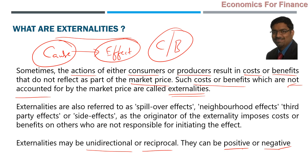Externalities may be unidirectional or reciprocal; they can be positive or negative. Practically, most cases they are unidirectional and negative. What other names can we give to externalities? They can be called spillover effects, neighborhood effects, third-party effects, or side effects. The originator of the externality imposes costs or benefits on others who are not responsible for initiating the effect.